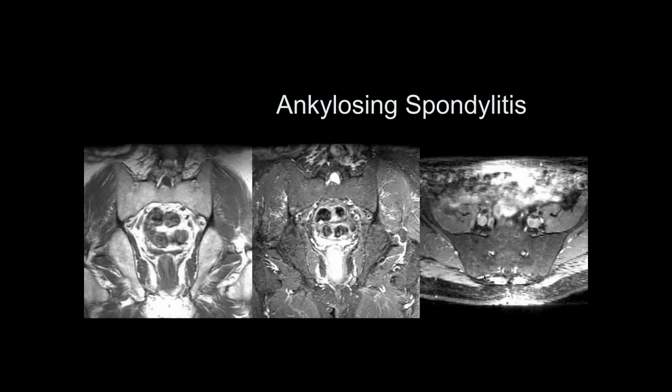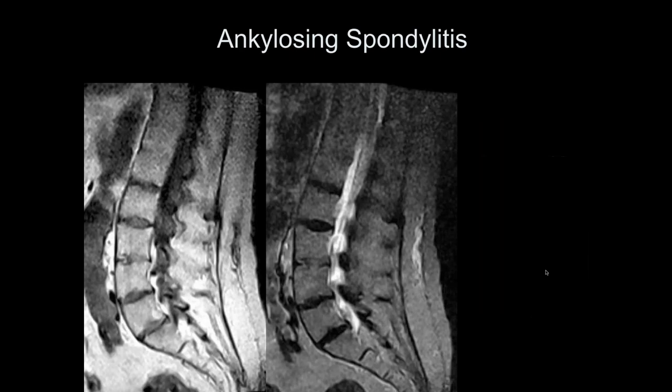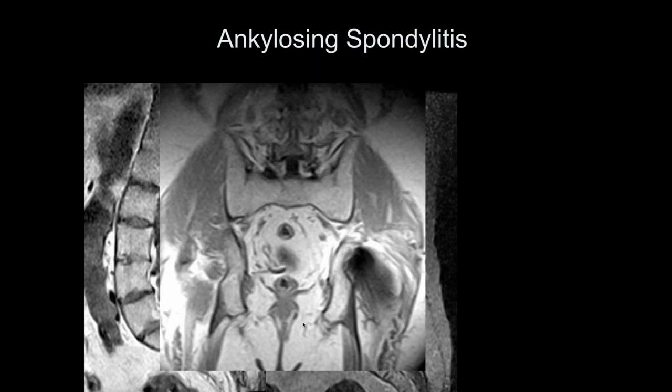Here's a more end-stage case with complete fusion of the sacroiliac joints. These vertebral bodies are completely fused — both posteriorly and anteriorly — as is the sacrum. This is end-stage ankylosing spondylitis. These diseases can also affect the zygapophyseal joints posteriorly.